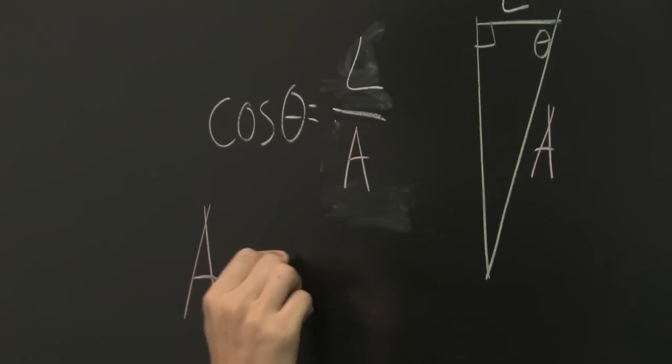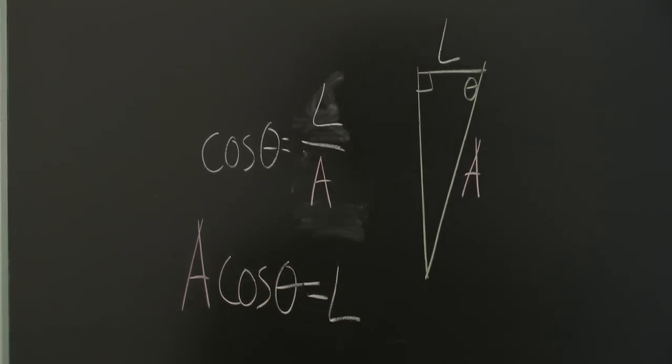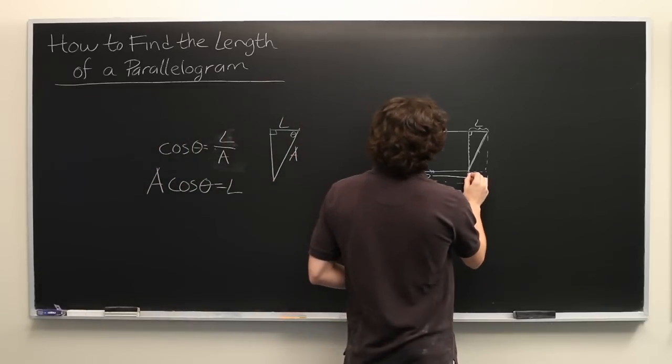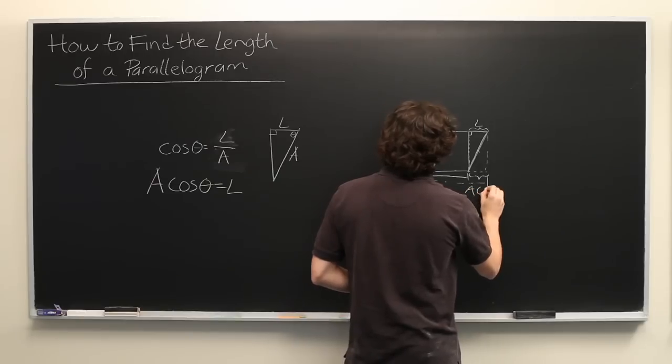A times cosine of theta equals l. So we know that this segment can be written as a cosine theta.